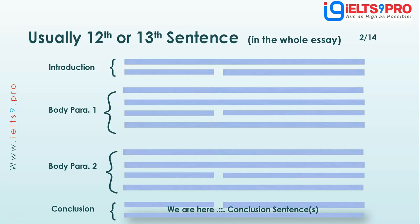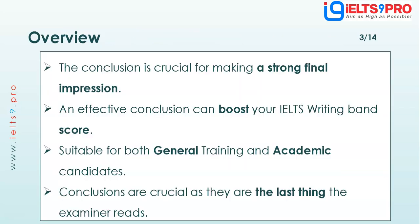Essentially, all you need is around 12 to 14 sentences — 12 or 13 is enough for your IELTS Writing Task 2. This should get you around 280 to 300 words, and that's all that you need.